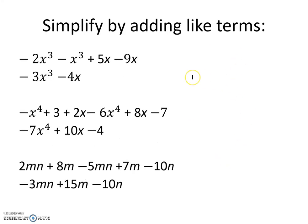We're going to simplify by adding like terms. We see here's an x cubed and here's another x cubed. This one is a negative 2 and this is a negative 1 for a total of a negative 3x cubed. We have a positive 5x minus 9x for a total of a negative 4x.